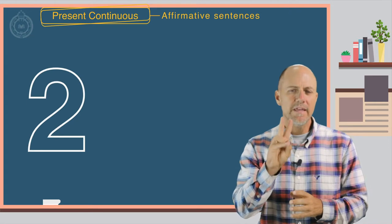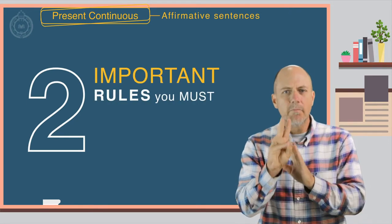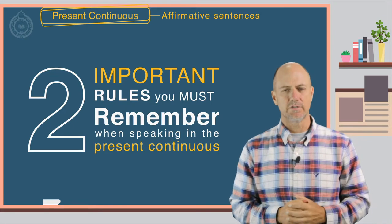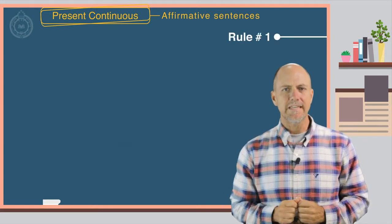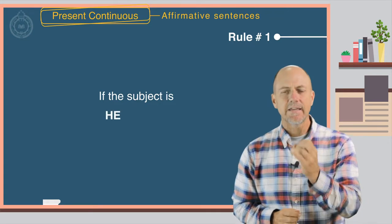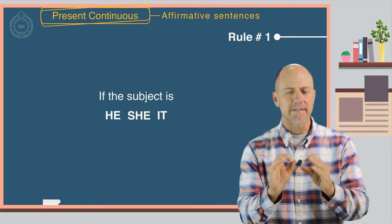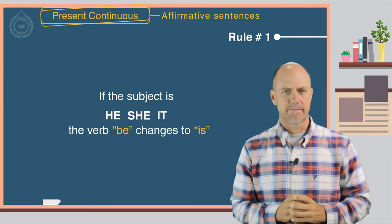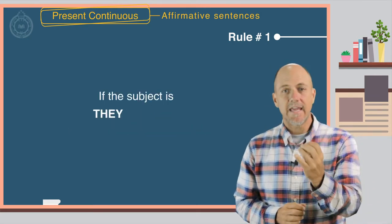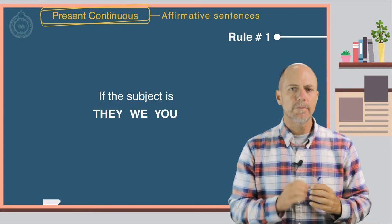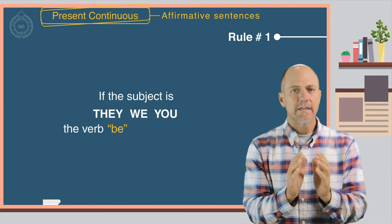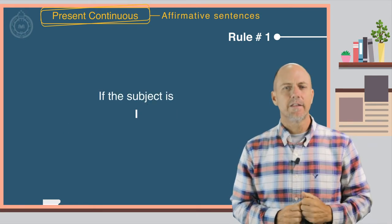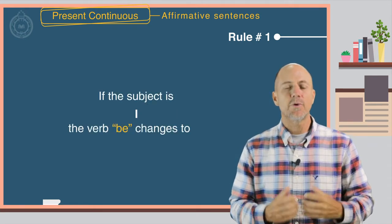There are two very important rules you must remember when speaking in the present continuous. Rule number one. If the subject is he, she, or it, the verb be changes to is. If the subject is they, we, or you, the verb be changes to are. If the subject is I, the verb be changes to am.